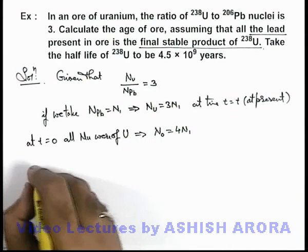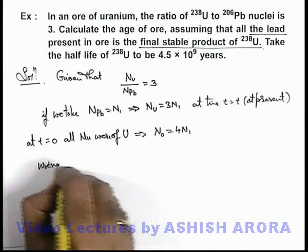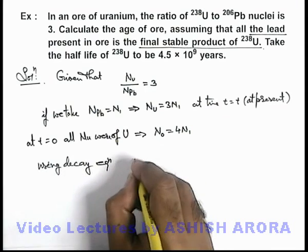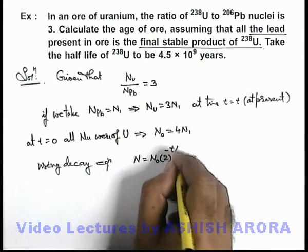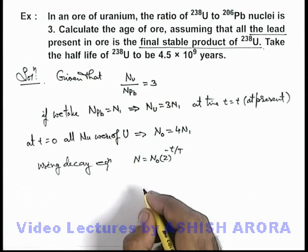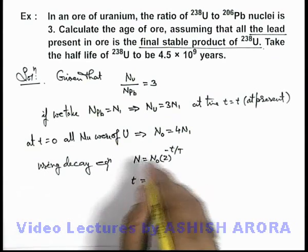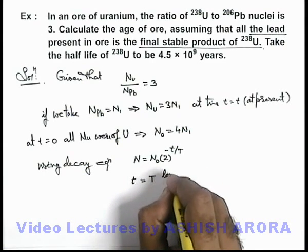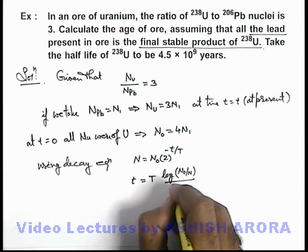In this situation, we can use the decay equation. We have N is equal to N0 times 2 to the power minus t by T. This can be simplified for time, which can be written as capital T, which is half-life, times log of N0 by N divided by log 2. In previous questions also, the similar form we have used.